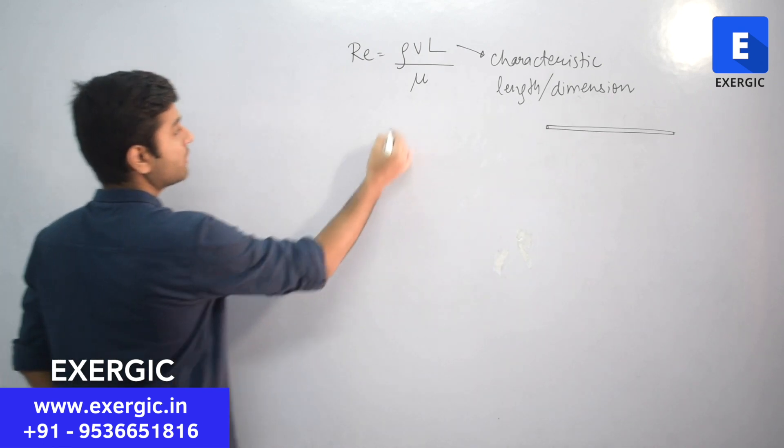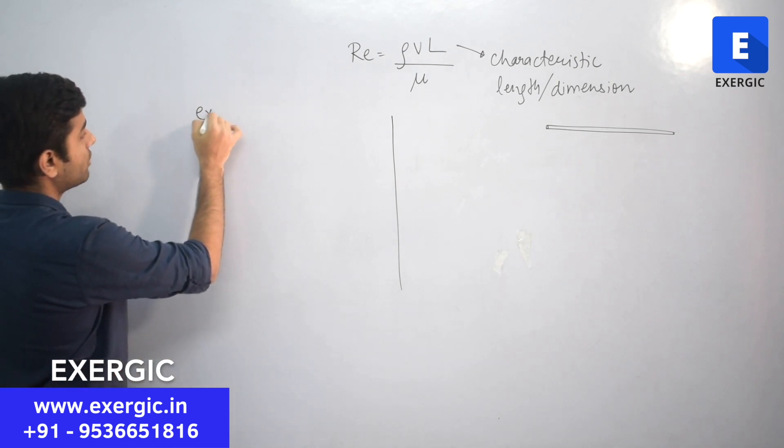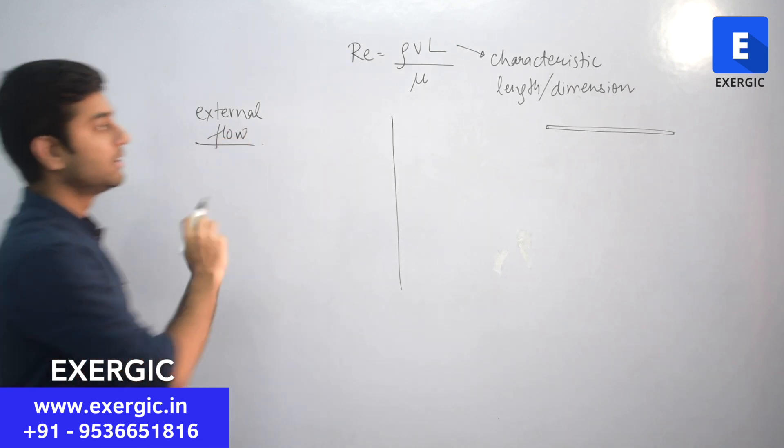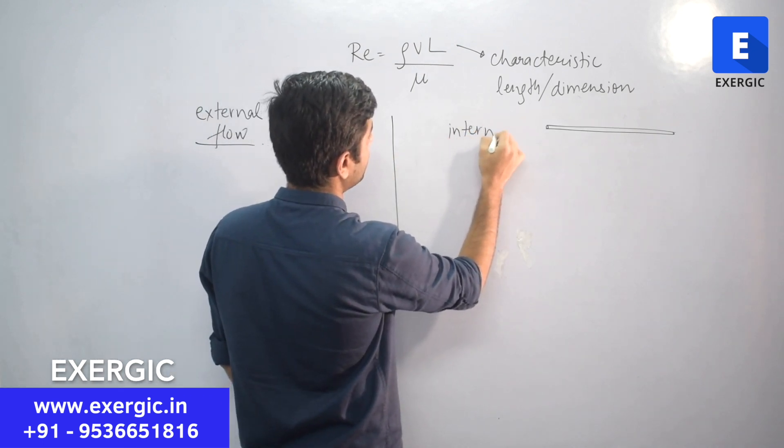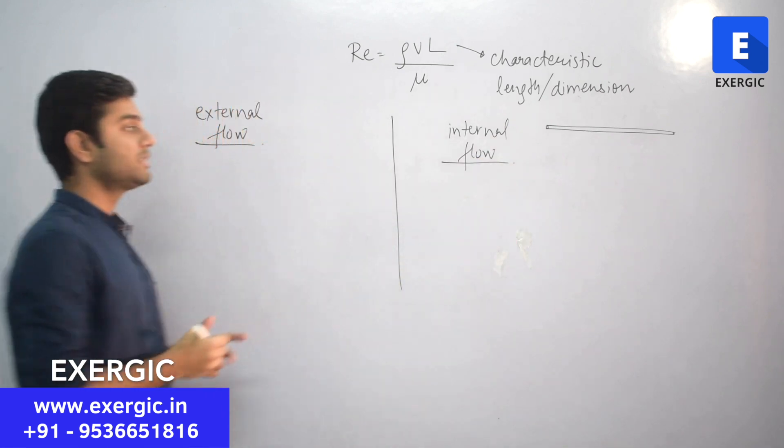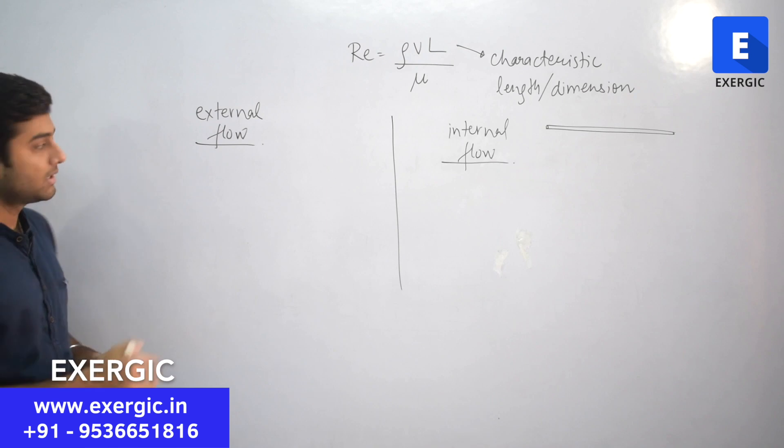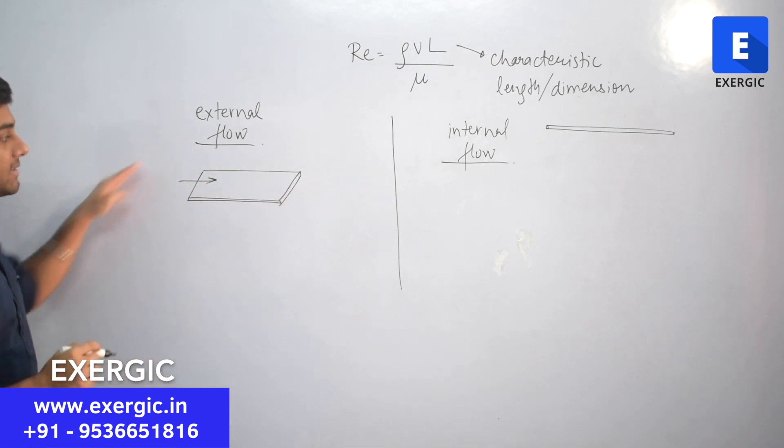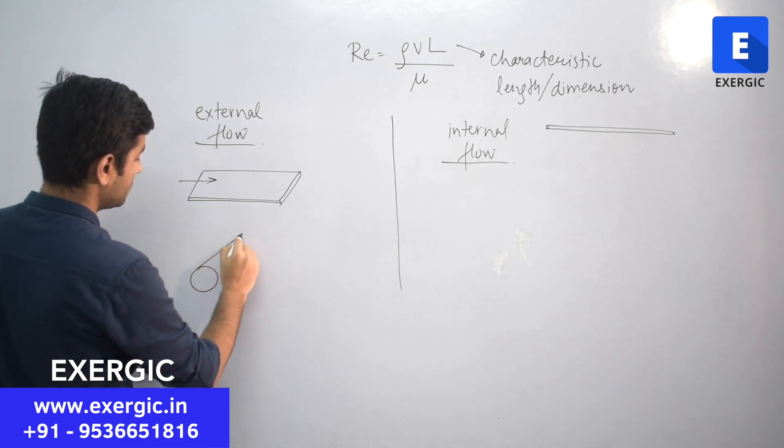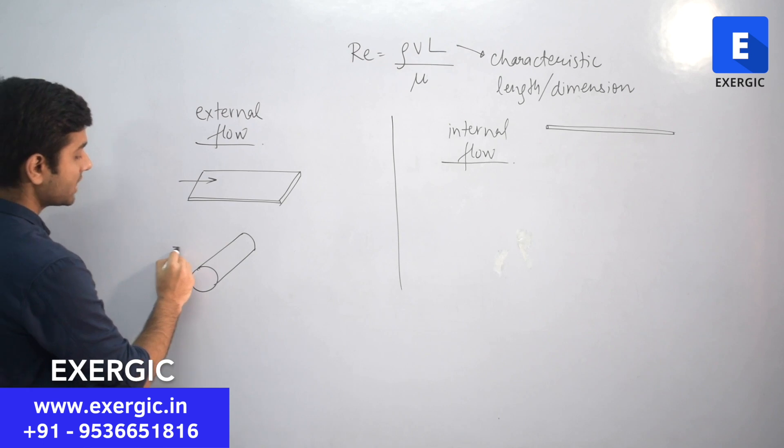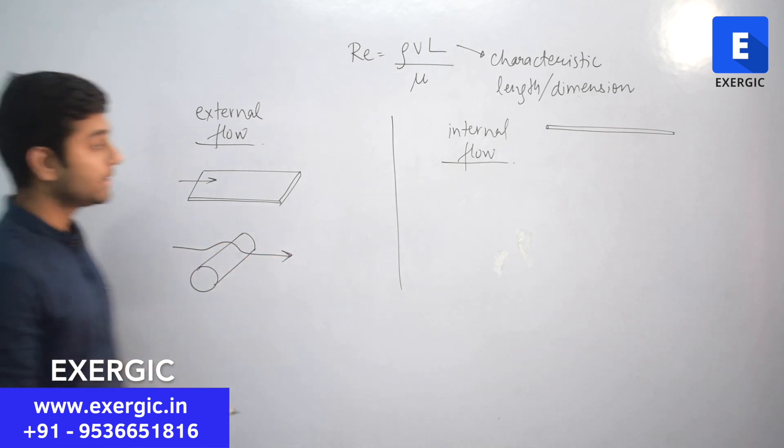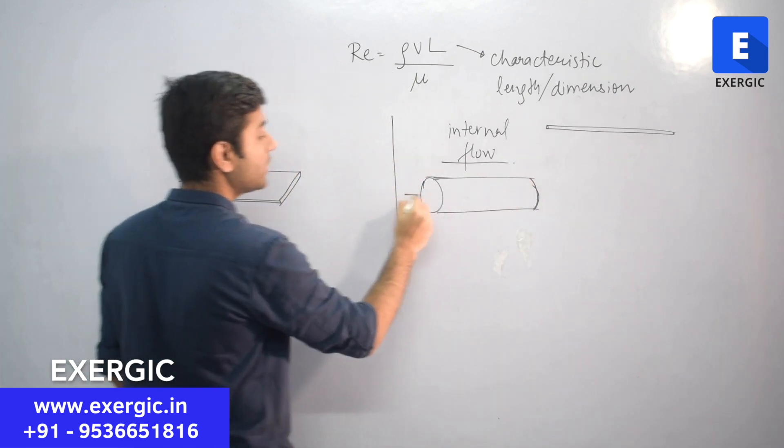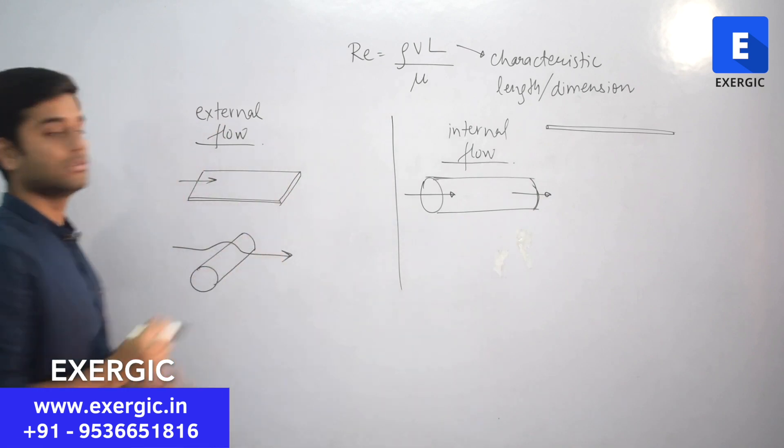So, it depends upon what type of system do we have. On the basis of flow, we have two types of flow: external flow and internal flow. External flow means on the basis of how flow is occurring with the system. External flow is that flow which occurs over a particular surface like if we have a flat plate and some fluid is flowing over it. So, it's an external flow. We have a cylinder and flow is occurring over it, so it's an external flow. But if we have a pipe of circular cross section and fluid is flowing into this, it's an internal flow. I am sure you got the difference.